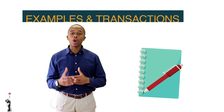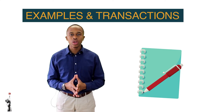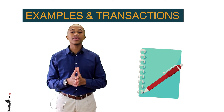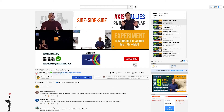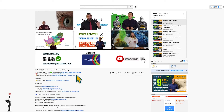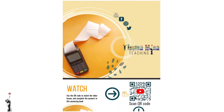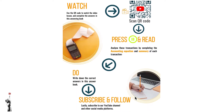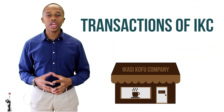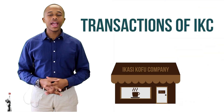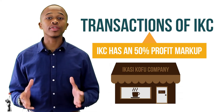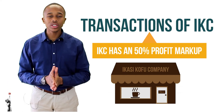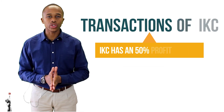For this lesson we will have a lot of examples and transactions. It will be a benefit for you if the teacher can head to the description link below to print out the templates for this lesson. We will look at a few transactions of Ika Sekofu Company, and just a side note, IKC has a profit markup of 50%. Now let's look at the first transaction.